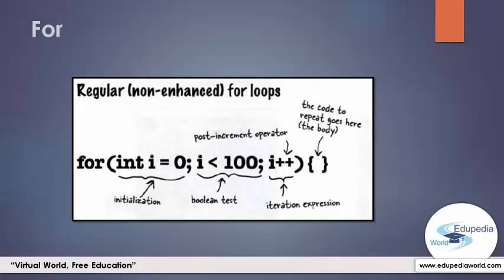The three parts are: the initialization part, the boolean test part, and the iteration expression part. In plain English, it says repeat 100 times. The compiler sees this as: from the first part, create an int type variable i and set it to the value 0. From the second part, repeat while i is less than 100. From the third part, at the end of each loop iteration, add 1 to the variable i. In the third part you will see two plus marks — we call this the post increment operator. This expression means i equals i plus 1.